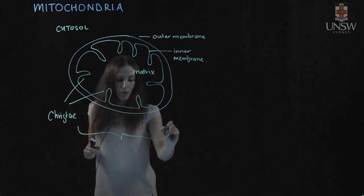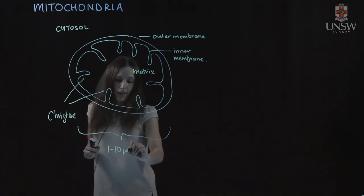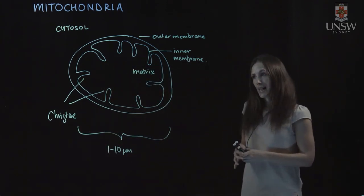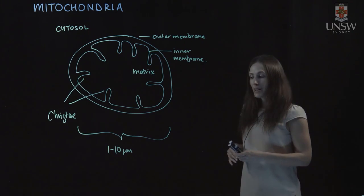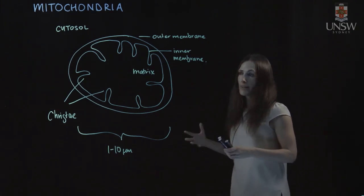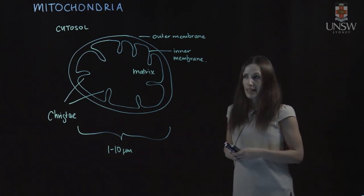The size of a mitochondrion can vary from one to 10 micrometers, and we can have a number of mitochondria in a cell. So some eukaryotes have just one mitochondria in a cell, quite a large one, others have hundreds of mitochondria, and some have thousands of mitochondria in a cell.